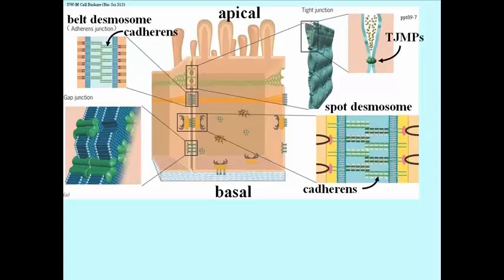Tight junctions, if you look at the upper right, are held together by tight junction membrane proteins, or TJMPs, shown here. They are not among the proteins we've talked about so far. What these do is create a watertight seal between two cells. You can see some dissolved substances above the tight junction membrane protein complexes but not being able to get through.